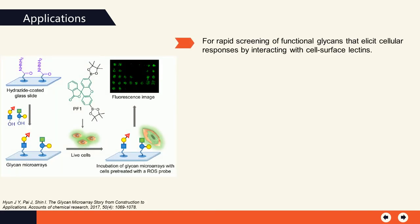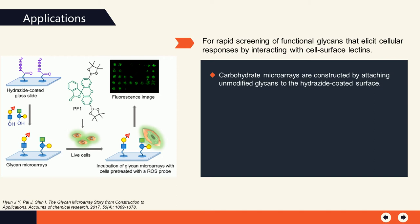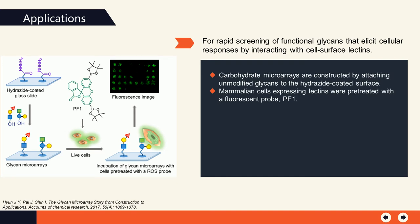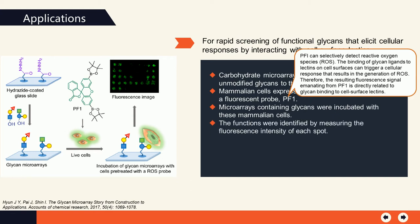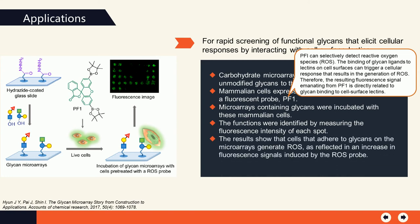Glycan microarray technology can also be employed for rapid screening of functional glycans that elicit cellular responses by interacting with cell surface lectins. Carbohydrate microarrays are constructed by attaching unmodified glycans to the hydroxide-coated surface. Mammalian cells expressing lectins were pre-treated with a fluorescent probe, PF1, which can selectively detect reactive oxygen species. The binding of glycan ligands to lectins on cell surfaces can trigger a cellular response that results in the generation of ROS. Therefore, the resulting fluorescence signal from PF1 is directly related to glycan binding to cell surface lectins. The microarrays containing glycans were incubated with these mammalian cells, and functions were identified by measuring the fluorescence intensity of each spot. Results show that cells adhering to glycans on the microarrays generate ROS, as reflected in an increase in fluorescence signals induced by the ROS probe.